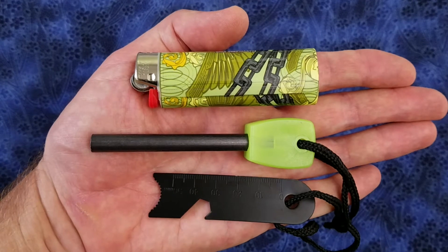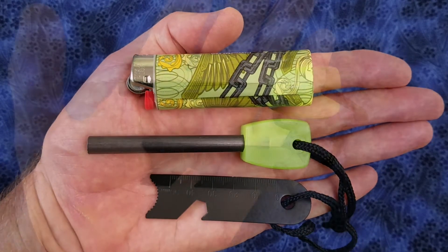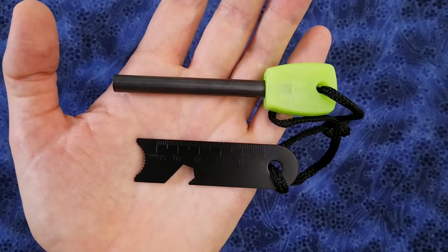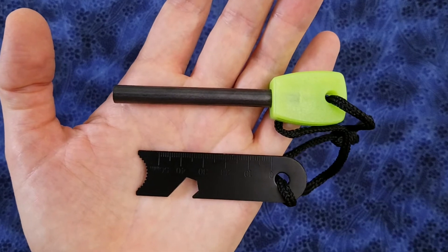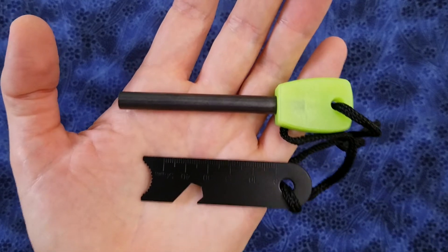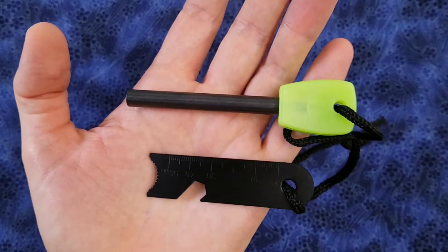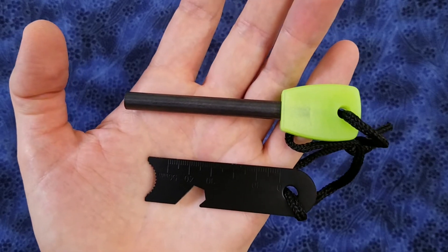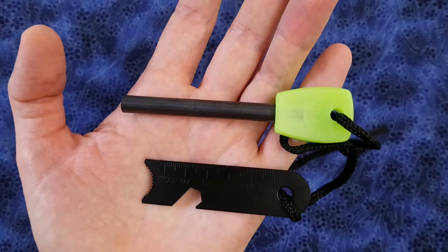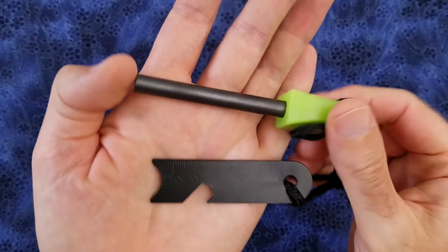Here is a size comparison with a standard size Bic lighter. I have not tried out this ferro rod, but it has a lot of good reviews on the Self Reliance Outfitters website. Personally, for me, the weight of 1.6 ounces total is probably a bit much for my survival kit because I like to go very lightweight. But it would be good to play around with it.